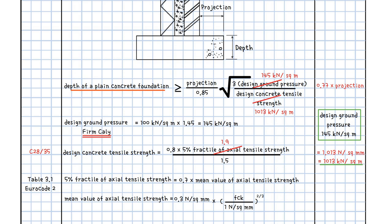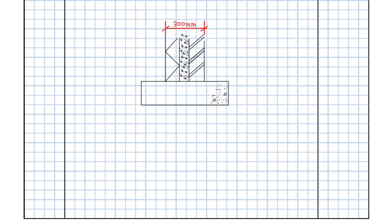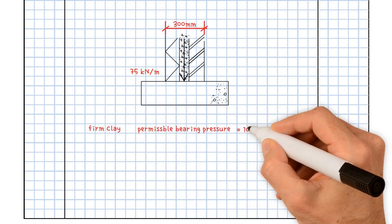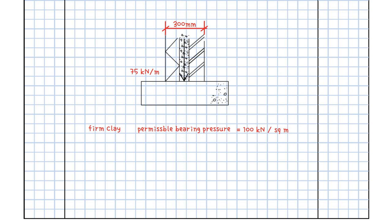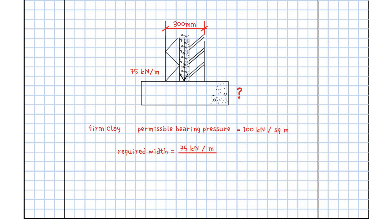Let's now take a simple example. A cavity wall for a domestic building has an overall thickness of 300 mm. It supports a total unfactored load from the roof, floors, and self-weight of 75 kN/m. The soil at foundation level is firm clay with a permissible bearing pressure of 100 kN/m². We need to determine the dimensions of a suitable unreinforced strip foundation.